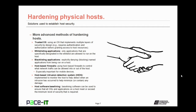An advanced option of host hardening is using host-based firewalls to control what network traffic is allowed into or out of the host. This is especially important for mobile devices, in particular laptops. Host-based intrusion detection systems may also be used — these can be implemented to monitor the host and help detect when an intrusion has occurred to minimize or contain any damage. Finally, host software baselining can be implemented. Baselining software can be used to ensure that all operating systems and applications on hosts meet or exceed the minimum level of security required.